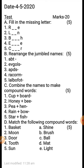In question one, fill in the missing letters — it is from lesson number one. Then be cautious: rearrange the jumbled names, which are sports names. You all have to rearrange them. Next, combine the names to make compound words — you have to combine these words and make a compound word, such as cup plus board, honey plus bee.